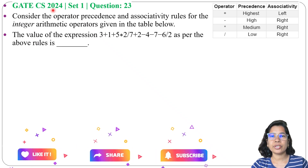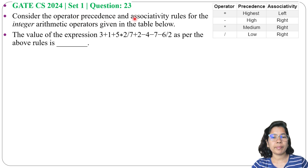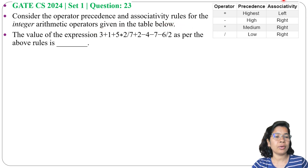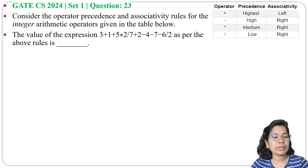Let's solve one previous question on stack. This question was asked in GATE CS 2024, Set 1, Question number 23. Consider the operator precedence and associativity rules for integer arithmetic operations given in the table below. We need to find the value of the expression as per the given rules.